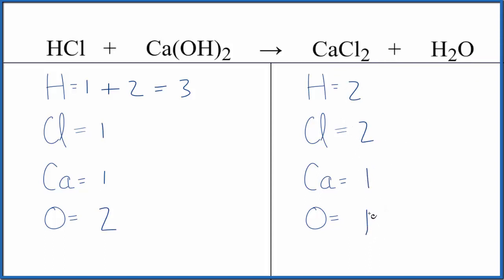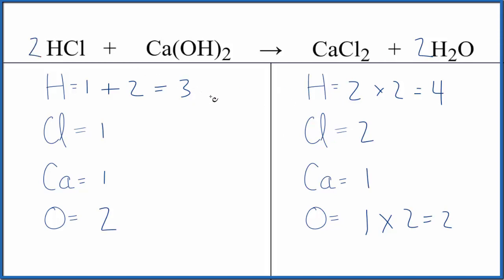In this case, why don't we start by balancing the oxygens? If we change the coefficient in front of H₂O — let's say we put a two there — one times two gives us two oxygens. Those are balanced. Two times two gives us four hydrogens, so that changed the number of hydrogens. Now we can see that all we need to do to balance the chlorine and the hydrogen is put a two in front of the hydrochloric acid. Updating this: one times two is two, plus two times one is two, giving us four total hydrogens. Those are balanced.